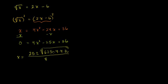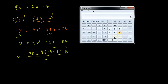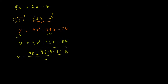Let's get our calculator out. We have 625 minus 16 times 36. 16 times 36 equals 576, so 625 minus 576 equals 49. That's a nice perfect square — we know the square root of 49 is 7. So the discriminant simplifies to 49, and x equals 25 plus or minus 7, all over 8.